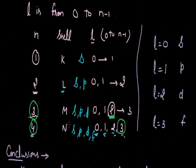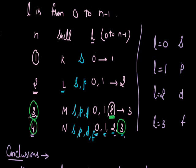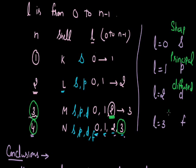Why are these subshells designated by the symbols s, p, d, and f? Basically these four alphabets indicate the starting letters of four words. S indicates the word 'sharp', p is the starting letter of 'principal', d indicates 'diffused', and f indicates 'fundamental'. The starting alphabets of these four words serve as the designated symbols for the four subshells.